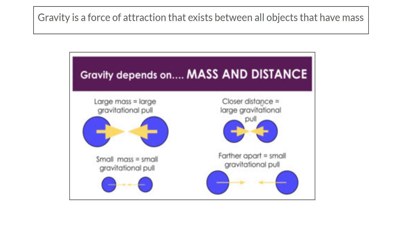Gravity also depends on distance. The closer the distance between two objects with mass, the larger the gravitational pull — kind of like a magnet. The farther away they are, the less the gravitational pull. That's why, since we're so close to Earth, we're gravitationally pulled by Earth. But someone in a spaceship outside of Earth's orbit is much farther from Earth, so they're not necessarily going to be pulled by Earth's gravity. They may instead be pulled by another planet's gravity or something bigger.